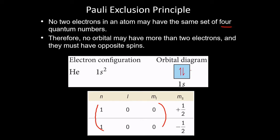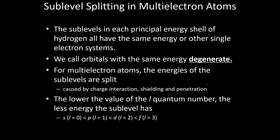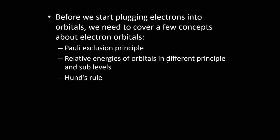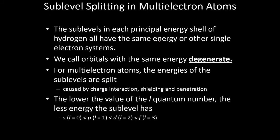In an orbital diagram, having two electrons in the same box both pointing spin-up is incorrect — that violates the Pauli exclusion principle. You can have two electrons in the same orbital as long as they point in opposite directions, meaning they have opposite spins.